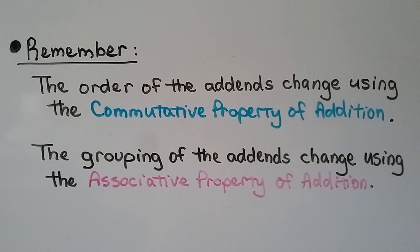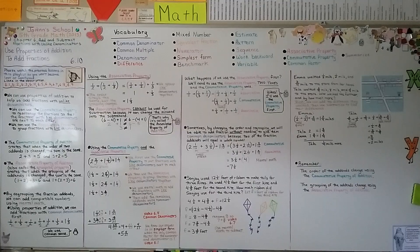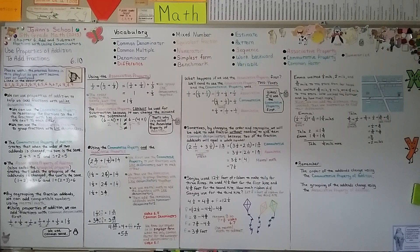Remember: the order of the addends changes using the commutative property of addition; the grouping of the addends changes using the associative property of addition. We're now finished with chapter 6 and moving on to chapter 7, which is all about multiplying fractions. I hope you have a wonderful day, stay well and safe — see you next time!